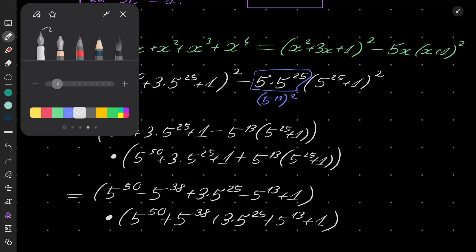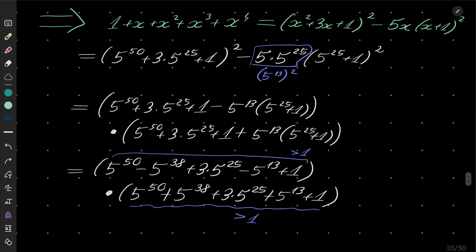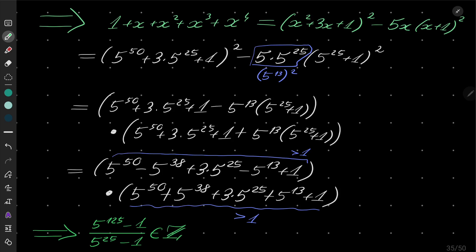We have a product of two numbers. It should be rather obvious that both of these numbers are greater than 1. The second factor is obviously greater than 1. And the first factor is also greater than 1 because 5 to the power 50 dominates the lower-power terms, making it positive, and we have plus 1. That means our number is a product of two integers greater than 1, which implies that 5 to the power 125 minus 1 over 5 to the power 25 minus 1 is a positive integer but not prime — so it's a composite number. That closes our problem.